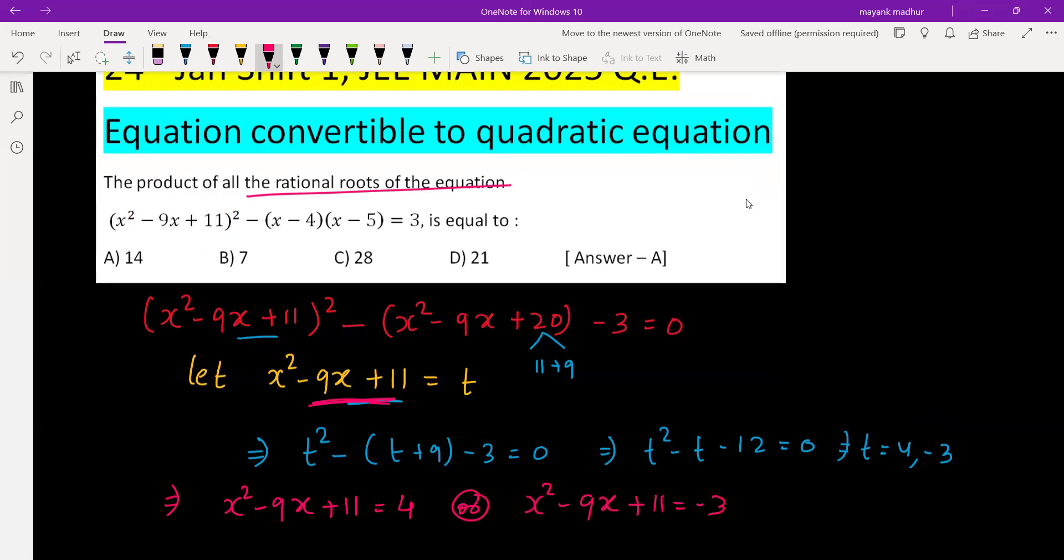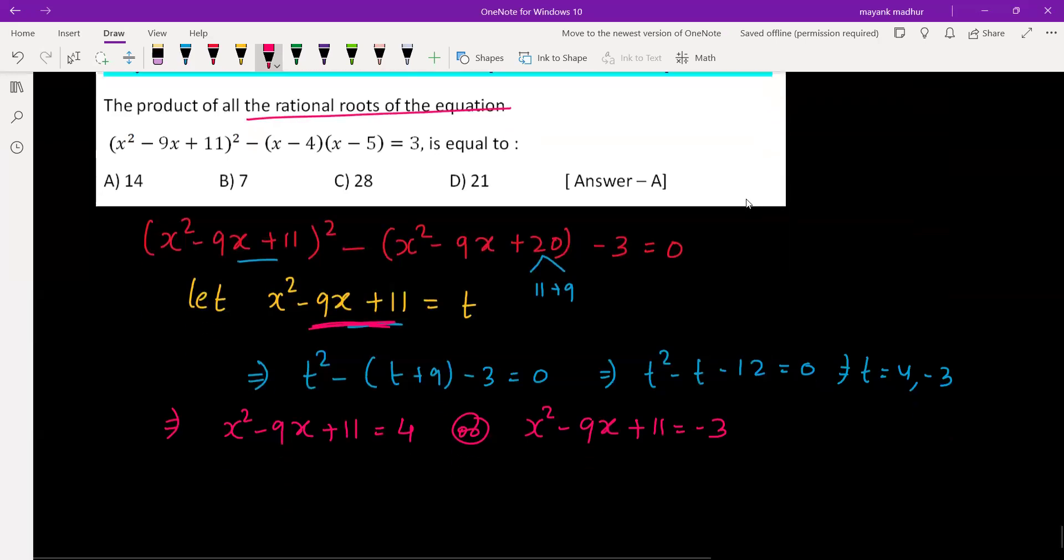So by this way you will get 2 quadratics and we have to check which one will have rational roots. So first one is x² - 9x + 7 = 0, and the second one is x² - 9x + 14 = 0.